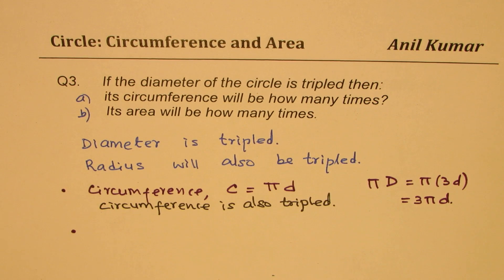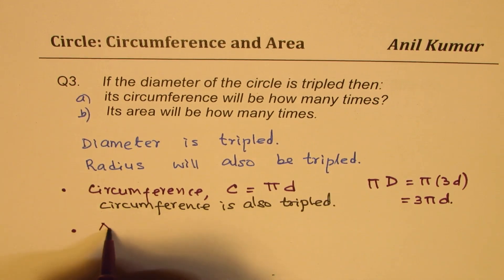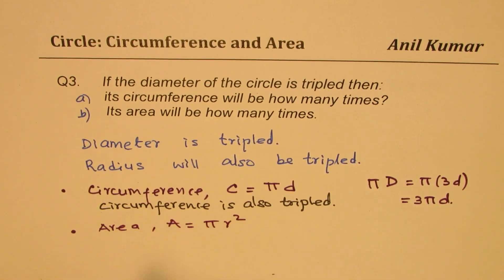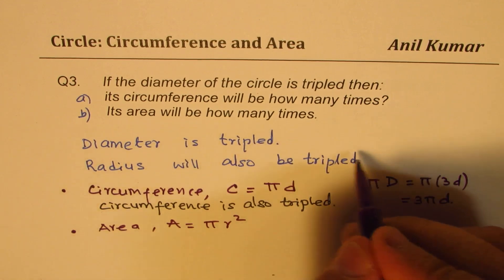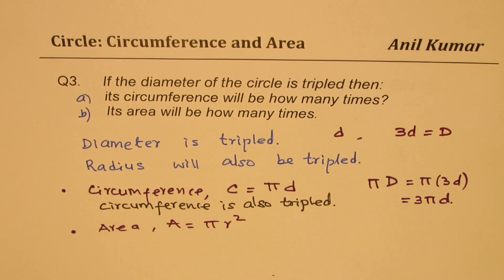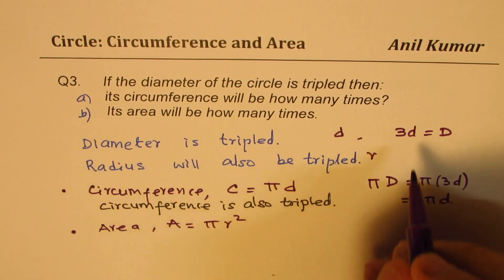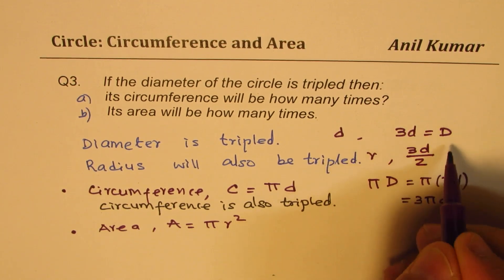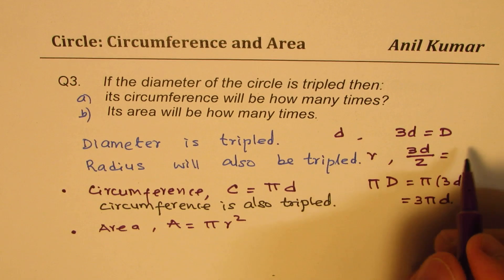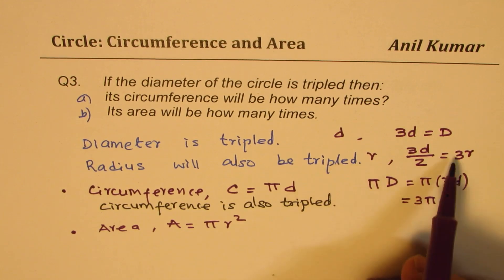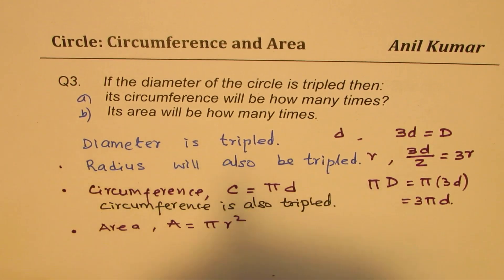Now, let's look into the area part. What is the formula for area? Area A is πR squared. If diameter is D and we triple it, it becomes 3D. So, the new radius will be 3D divided by 2, which is 3 times the original r. So, radius is also tripled.